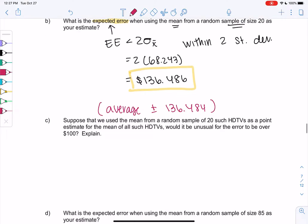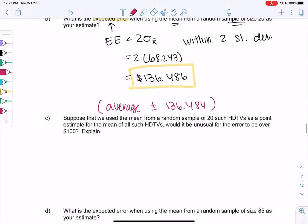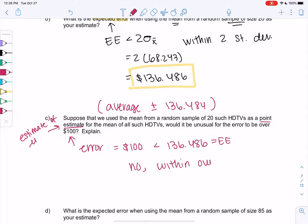So let's suppose that we use the mean from a random sample of 20 as a point estimate. So just an estimate of the mean. Point estimate is just estimating the mean. And would it be unusual for the error to be over $100? So I don't think so. So this means error is $100, but that's less than the expected error of 136.486. So it would not be unusual because it's within our expected error. You could also find Z-score, but we already did this work, so I'm not going to.